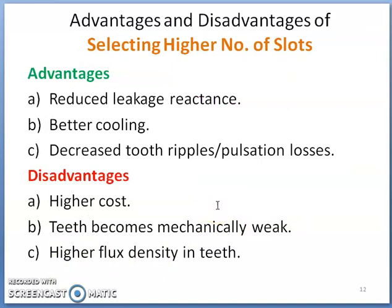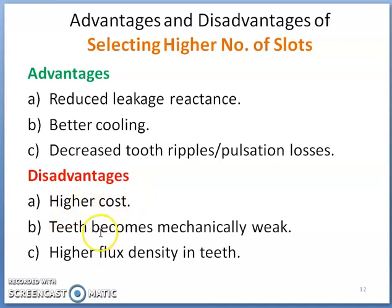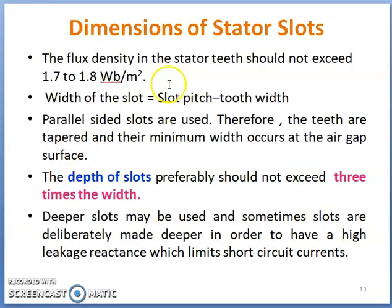The advantages of selecting a higher number of stator slots include: reduction in leakage reactance, better cooling because conductors per slot are fewer, and reduced tooth ripples as well as pulsation losses. The disadvantages include higher labor cost to insulate, place, and tape conductors, and the teeth become mechanically weak due to the decreased teeth section, while flux density in the teeth increases. Based on these trade-offs, the designer decides the optimum number of stator slots for the given machine.